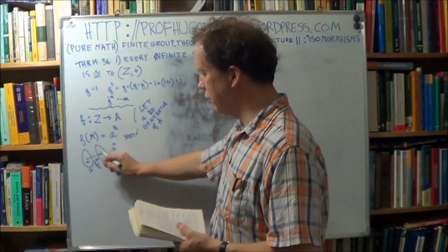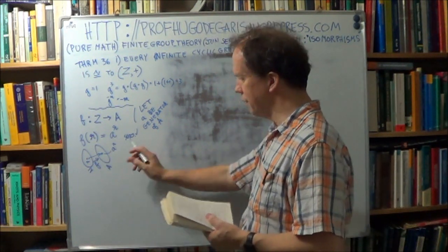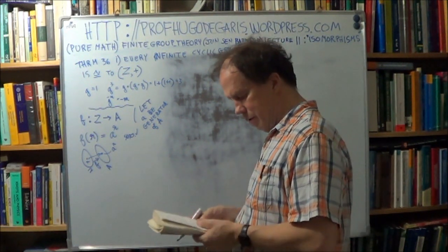They're all covered, they're all mapped. So by definition, this mapping f is surjective. Right, now how about injective?